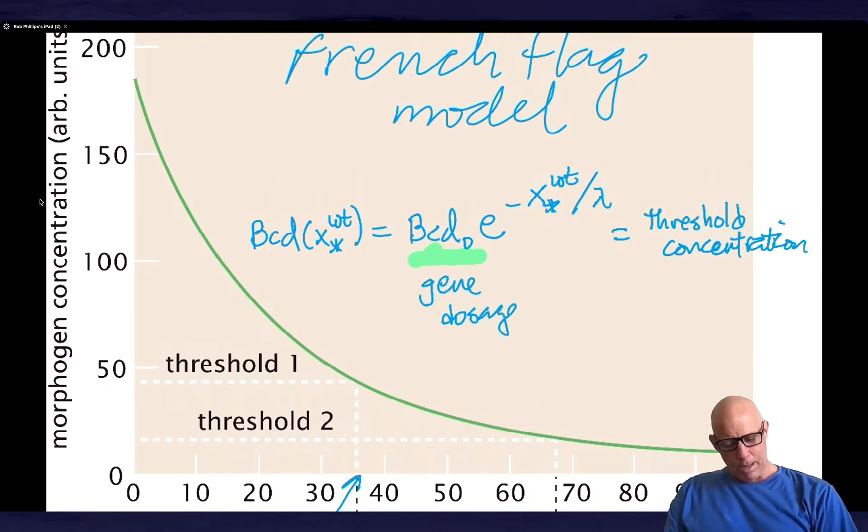Now, you could say, well, maybe by tuning the number of copies of the gene, it would do something other than just affect that prefactor. That's a good concern to have. And Thomas Gregor's group, to the best of my knowledge, has actually carefully checked that point. And what they find is that the only thing that changes is, in fact, the prefactor, the one that I'm showing you here. So this raises a super interesting prediction.